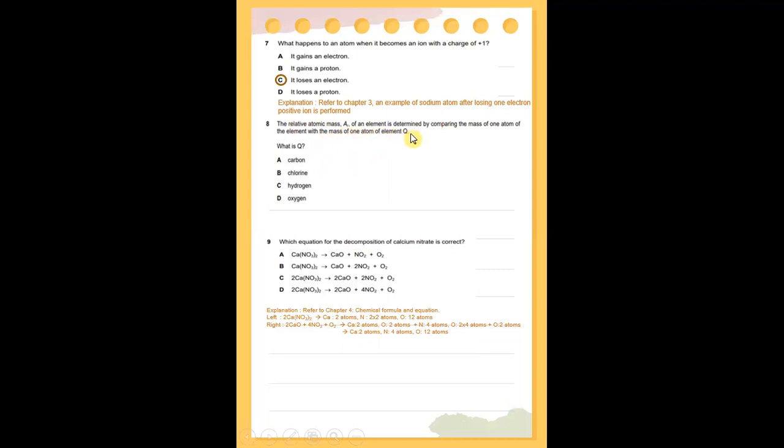The relative atomic mass A of an element is determined by comparing the mass of one atom of the element with the mass of one atom of element Q. What is Q? Refer to chapter 5, masses and moles. At present, carbon-12 is used as the standard of comparison, because its mass can easily be measured with a mass spectrometer. In addition, a carbon-12 atom is 12 times heavier than hydrogen. So, the answer is A, which is carbon.